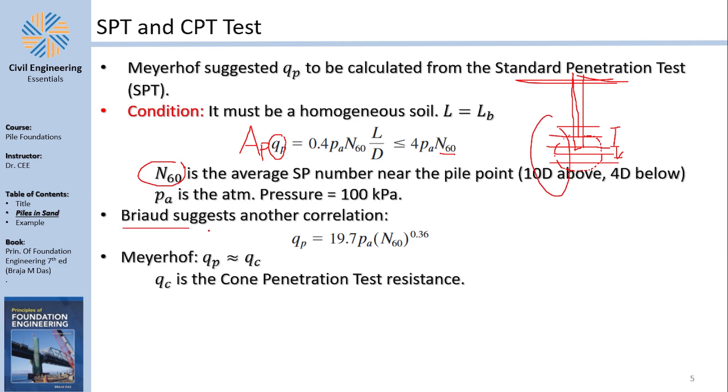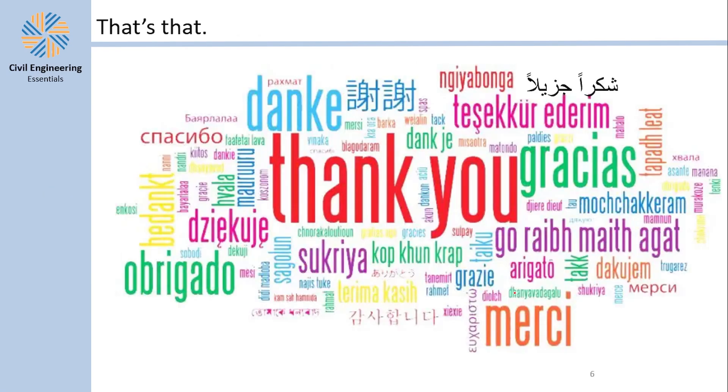There is another guy called Braud. I'm not sure if I mentioned his name correctly. He says basically that QP is some magic value N60 to the power of 0.36. Of course, here finally, there is something called the cone penetration resistance. In this case, QP equals QC. The cone penetration resistance here is exactly at the tip of the pile. So yeah, it's quite a shorter video, but I needed to finish Coyle and Castello.